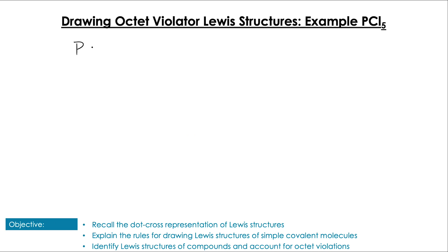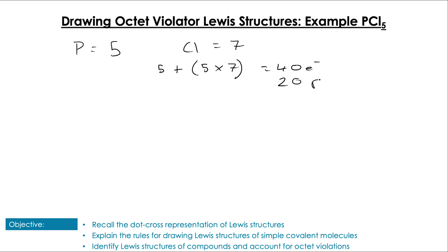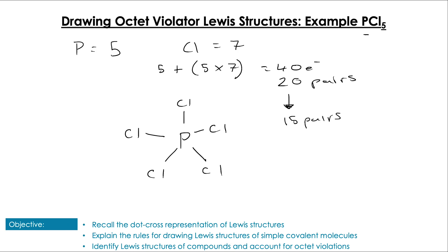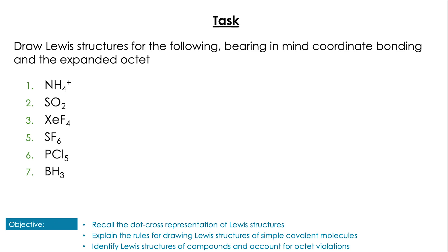This process works for octet-violating structures such as PCl₅. Totalling the electrons: five times seven for chlorine plus five for phosphorus gives us 40 electrons, or 20 electron pairs. Phosphorus is the least electronegative, so we put our five chlorine atoms around it in any arrangement and join with one pair each, leaving 15 remaining pairs. Adding those pairs around the chlorine atoms on the outside, we end up with zero remaining. All chlorines are happy, and phosphorus has 10 outer electrons — but that's okay because phosphorus can form an expanded octet, giving us a valid Lewis structure.